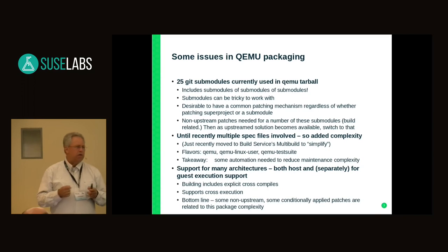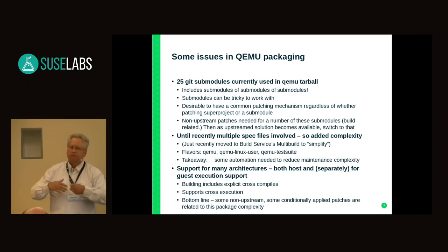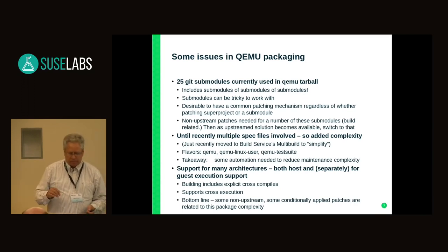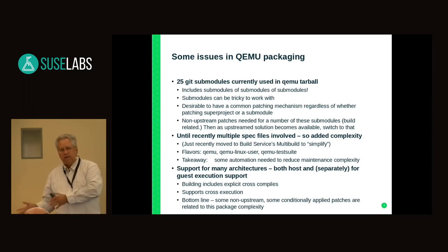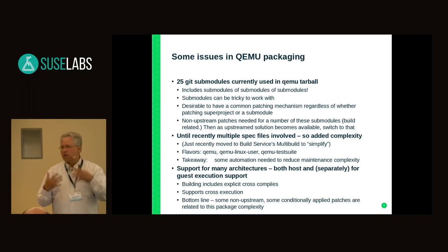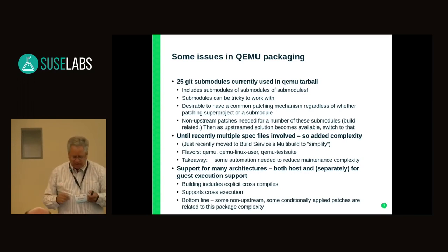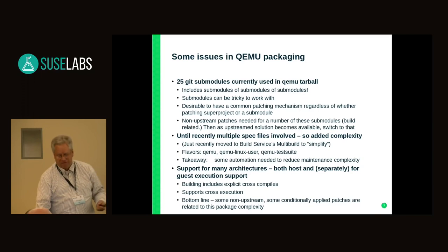The takeaway here is just the need for good automation in order to reduce the complexity of maintaining our package. QEMU also supports many architectures — that's kind of what its design was from day one. There's a huge number of different architectures and machine platforms, both on the host that we support building on and running on, as well as what we're going to emulate. We're doing cross-compiling from one architecture to the next, building firmware, and supporting running other architectures. All of those things add complexity to our packaging, hence the need for automation here.